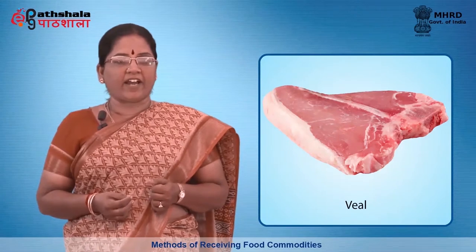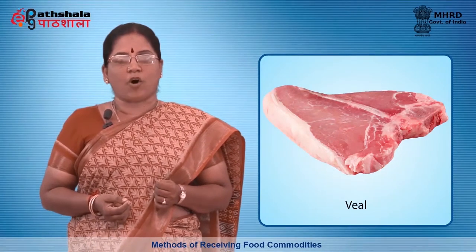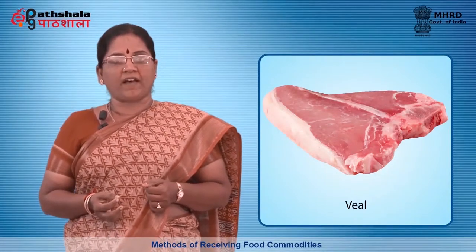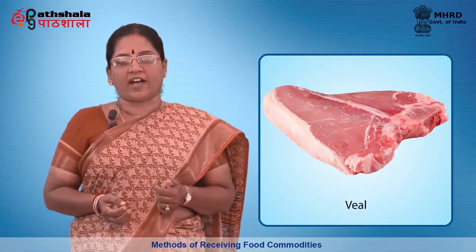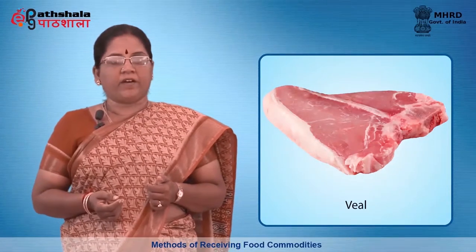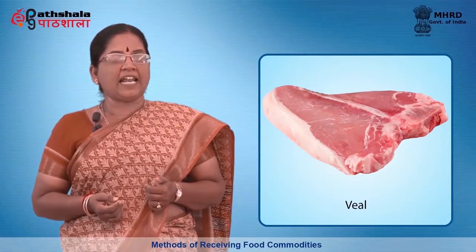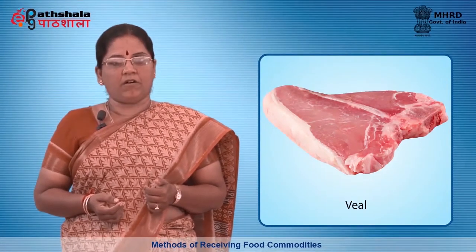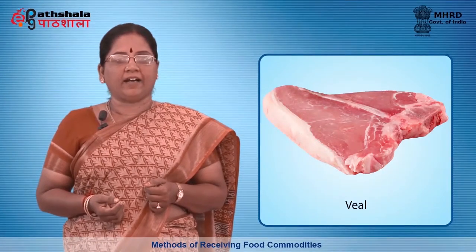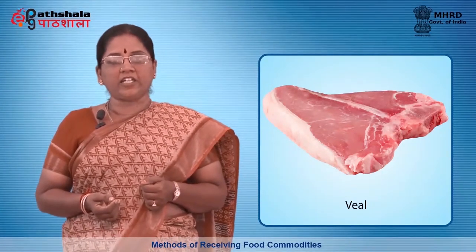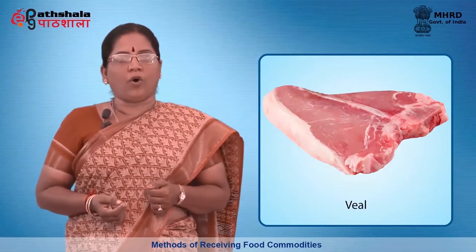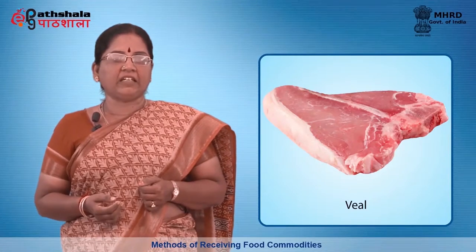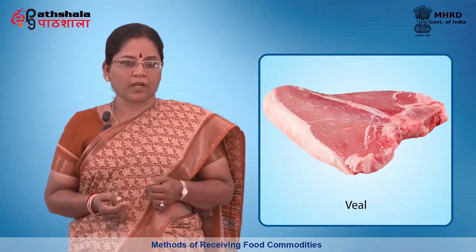Veal is defined as the flesh of bovine animals usually not over 12 weeks of age at the time of slaughtering. The flesh should be light pinkish-grey in colour, fine-grained, soft in texture and contain little intramuscular fat. The coat of exterior fat should be thin and pinkish-white.